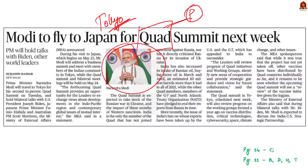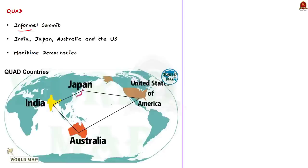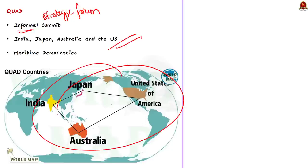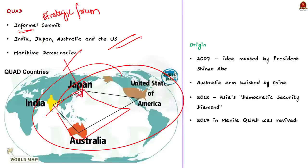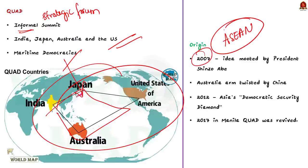Quad is an informal strategic forum. The members of Quad include India, Japan, Australia, and the United States of America — all maritime democracies. The group met for the first time in 2007 on the sidelines of the Association of Southeast Asian Nations (ASEAN). In 2007, the idea was mooted by Japanese Prime Minister Shinzo Abe, but there was pressure from China on the Australian government to prevent it from joining Quad.